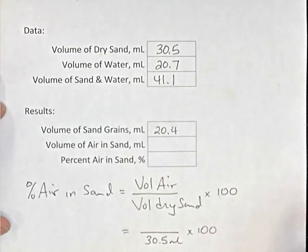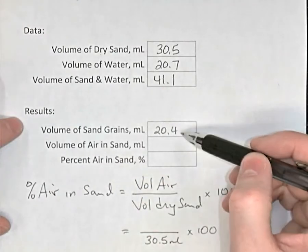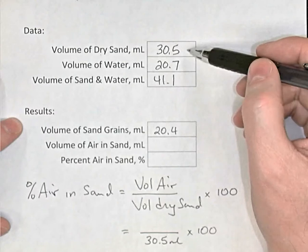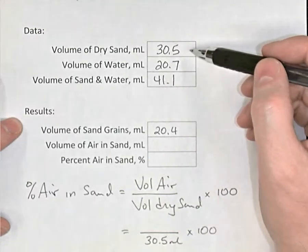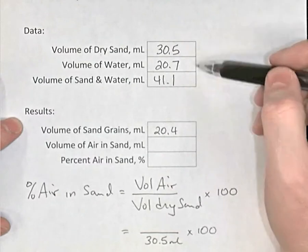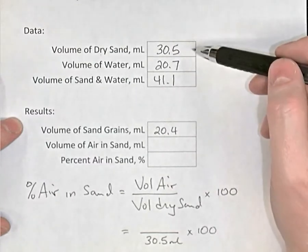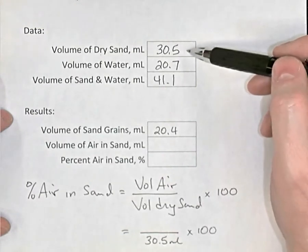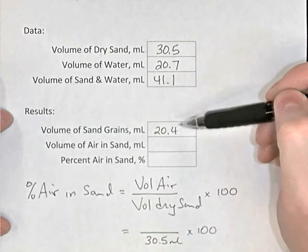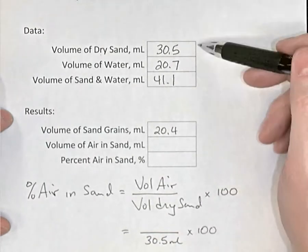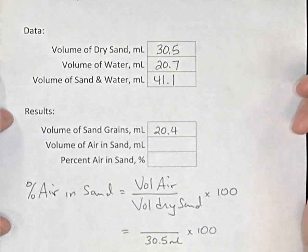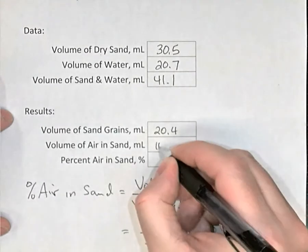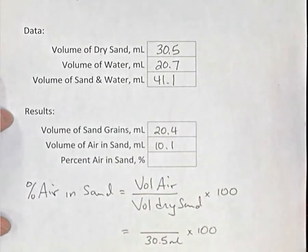Now that volume of sand grains, 20.4 milliliters, is less than the volume of the dry sand. The original dry sand volume was 30.5 mils. Why is the sand grain volume less than the dry sand volume? It's because the dry sand volume includes air. So if we take the 30.5 milliliters of dry sand and subtract the 20.4 milliliters of sand grains alone, the difference between those two things would be the volume of air that was in the sand. So 30.5 take away 20.4 gives me 10.1 milliliters of air that was in the sand.